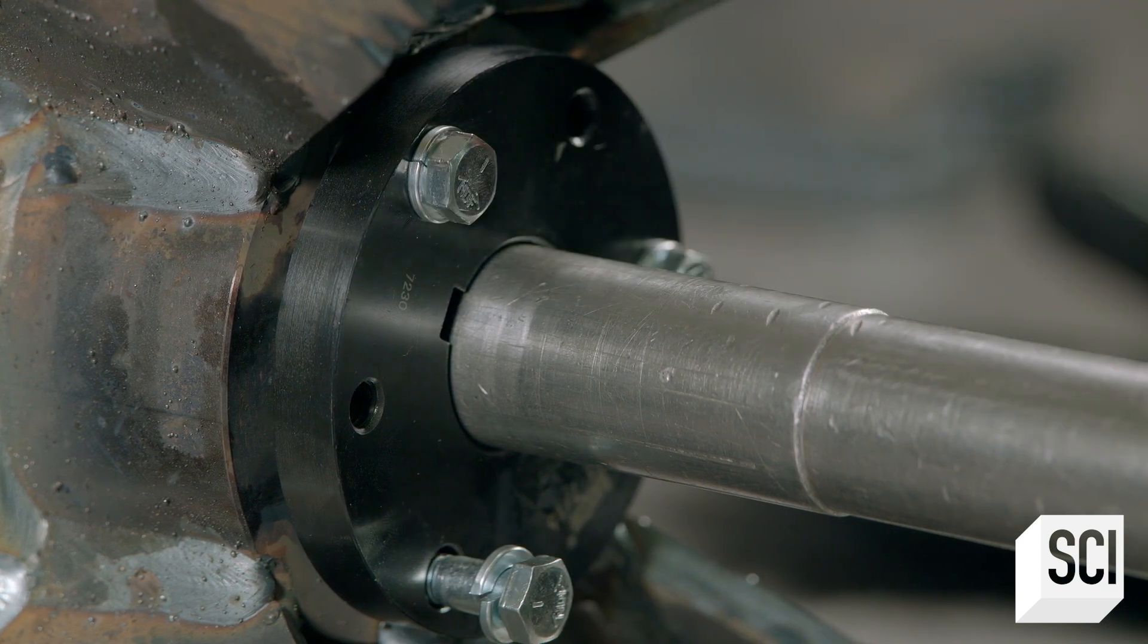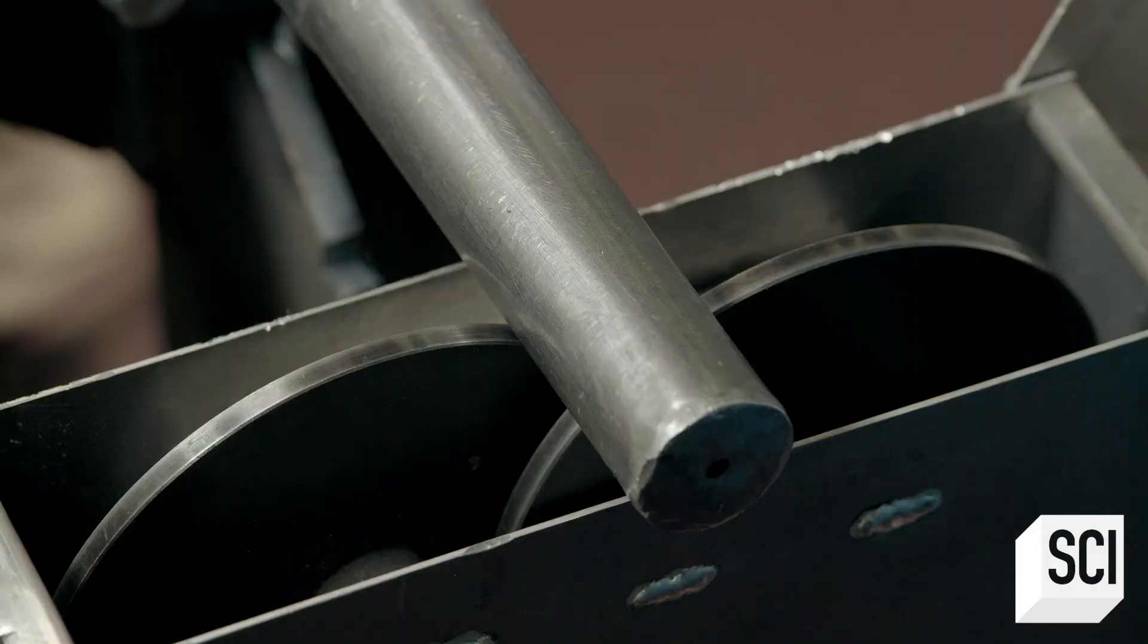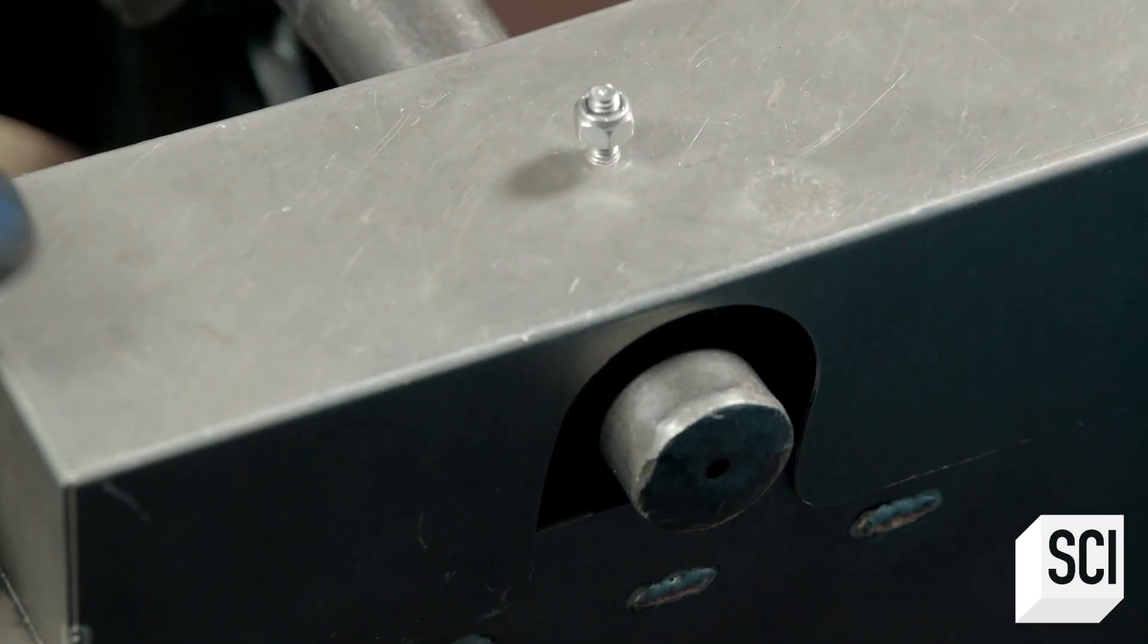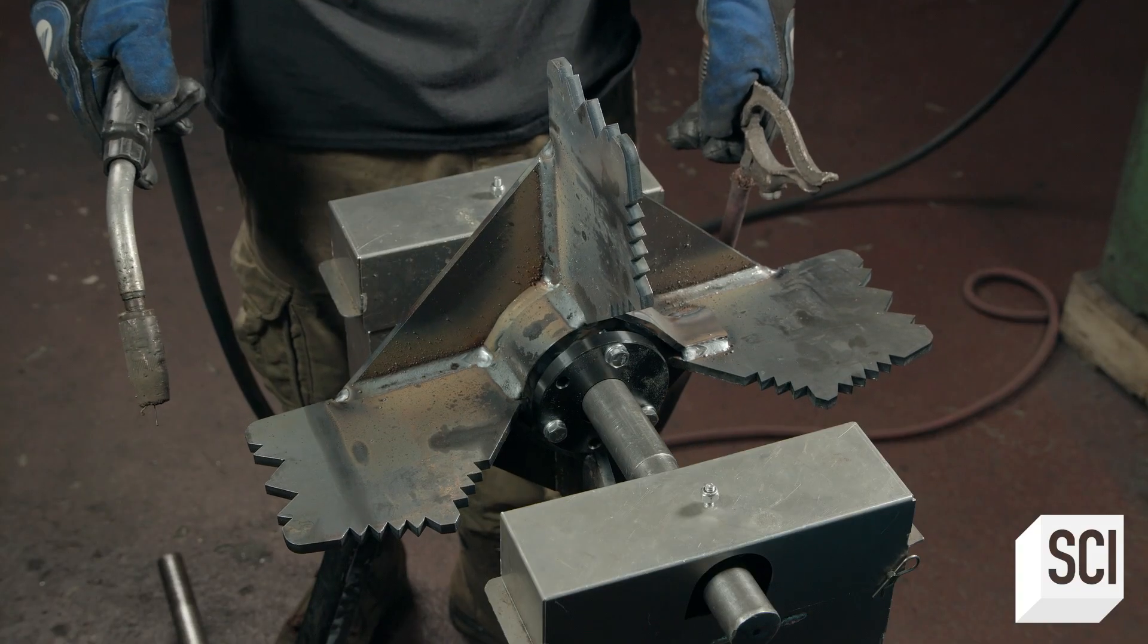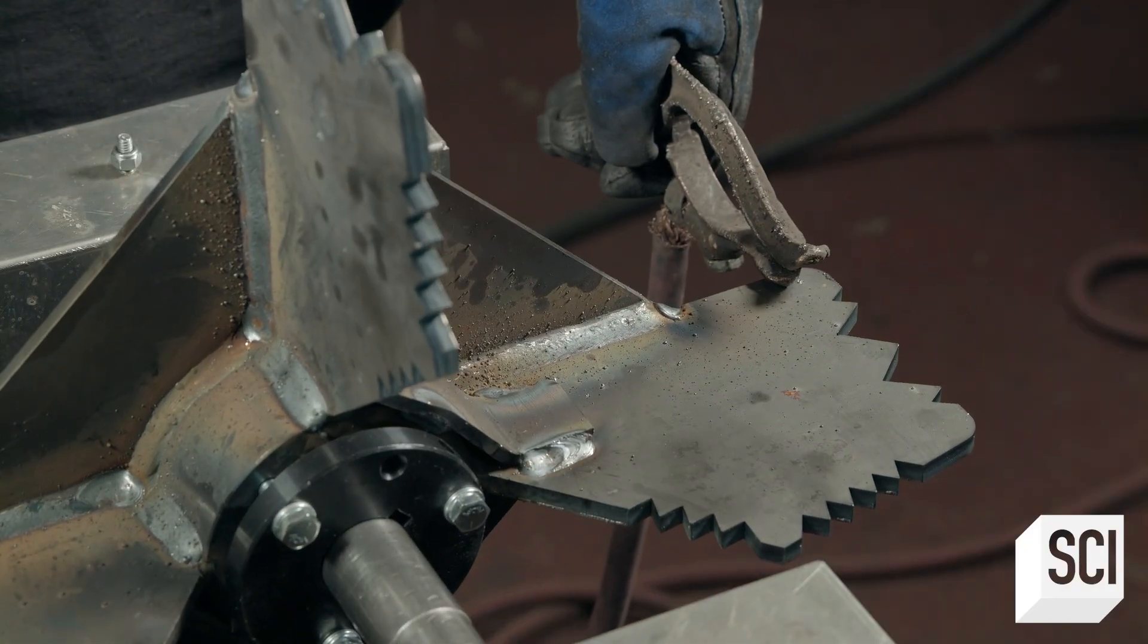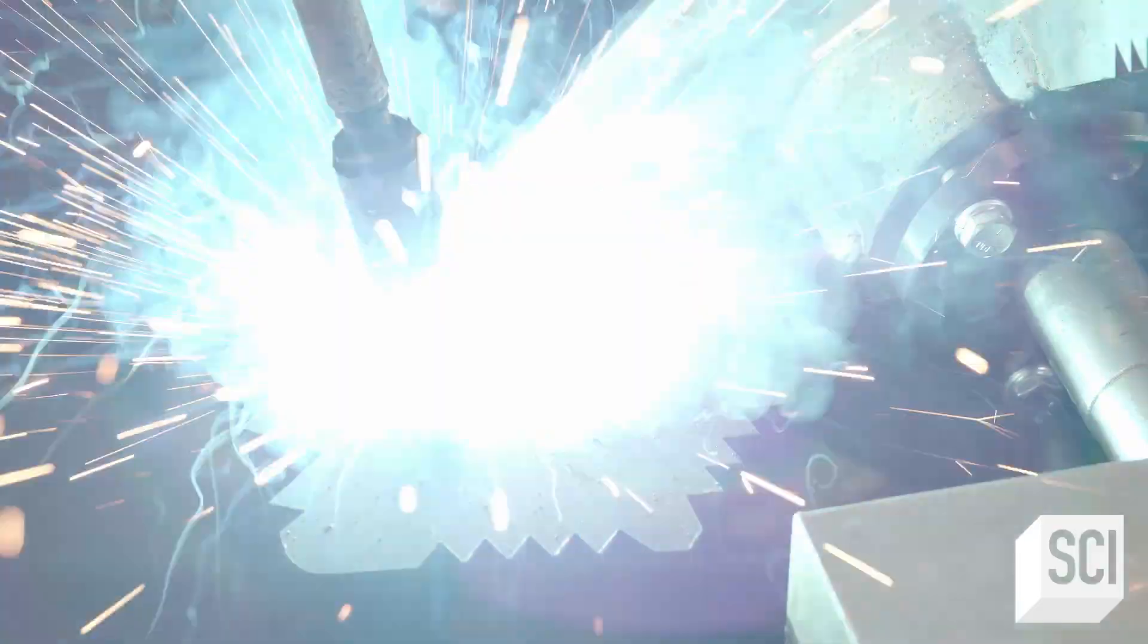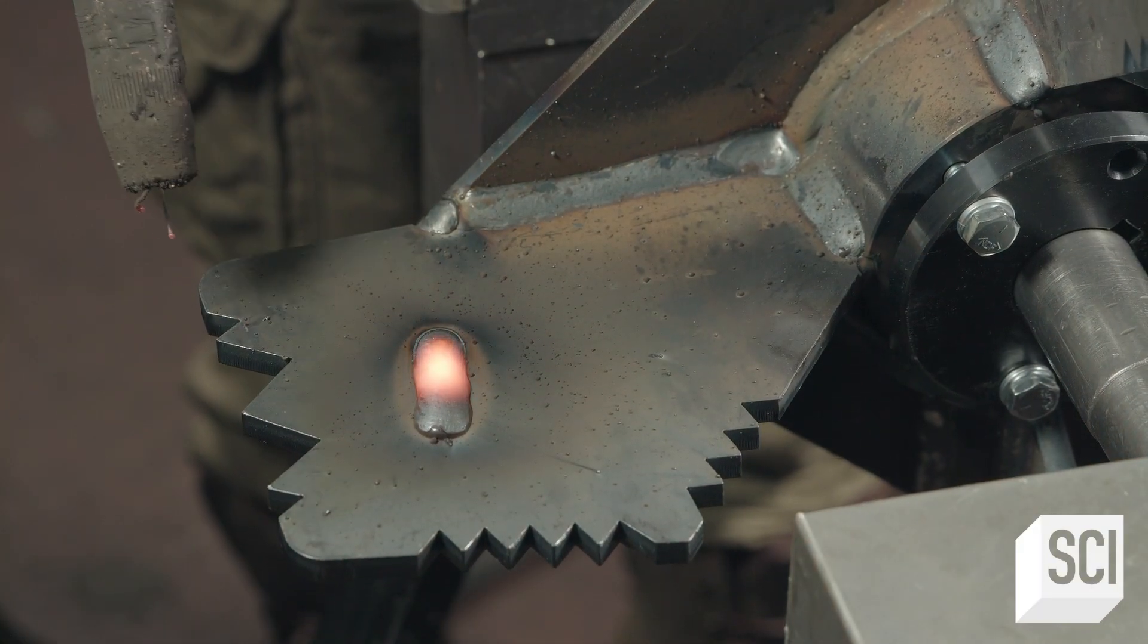He places the impeller on this machine to balance it. Since the impeller can spin at a speed of more than 3,000 revolutions per minute, this step is critical for the machine to run smoothly. To maintain stability, the welder adds beads of weld to the lighter side until the impeller balances.